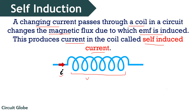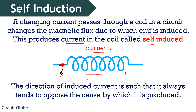Electromagnetic induction follows Lenz's law, which states that the direction of the induced current is such that it will always oppose the cause by which it is produced. However, it is not necessary that the direction of the induced current will always be opposite to the direction of the changing current.